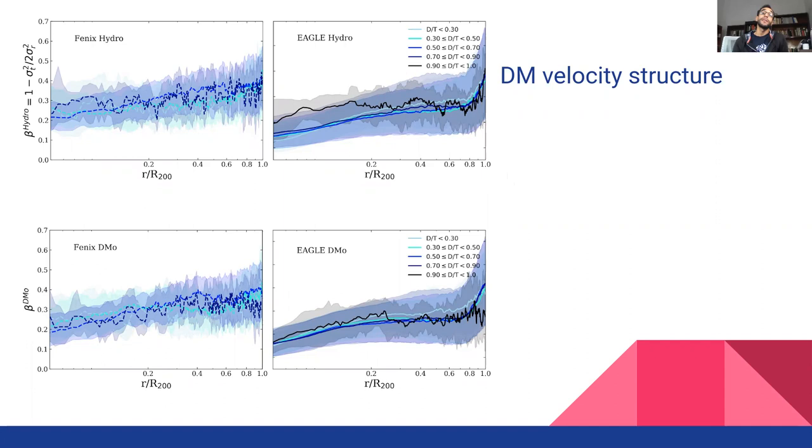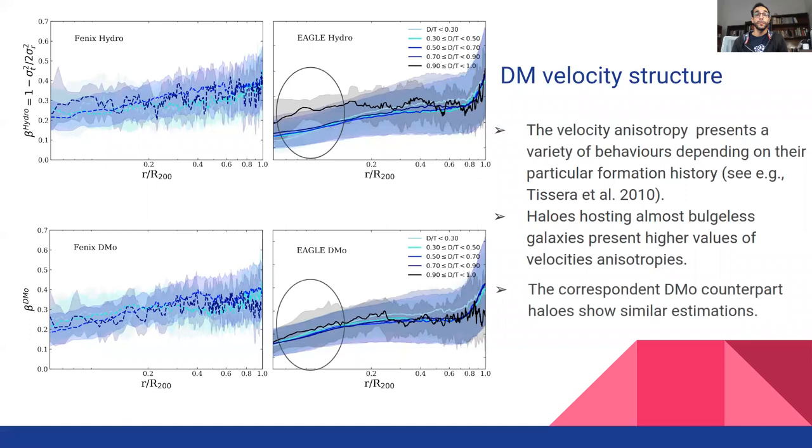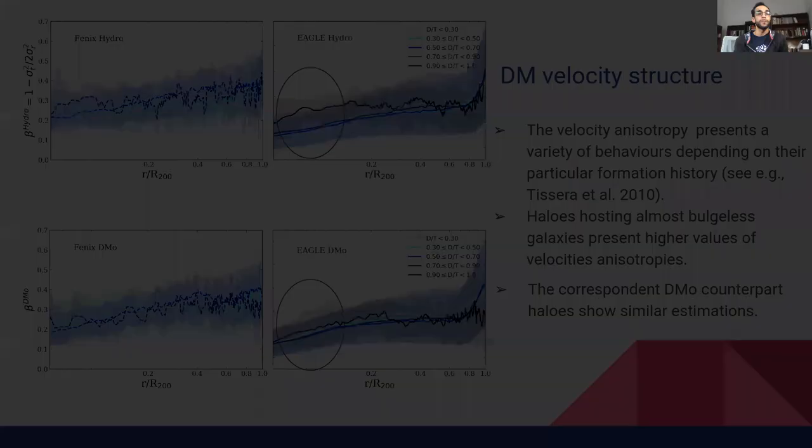Halos hosting almost disk galaxies, here in the black lines, present a higher value of velocity anisotropy at central radii. When the dark matter only is inspected, this shows slightly trends in the same sense, albeit weaker.